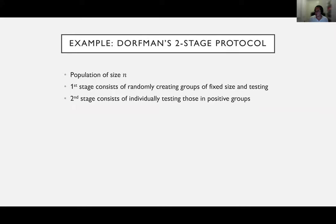An example to kick off the conversation on group testing is Dorfman's two-stage protocol from the 1940s, originally used to test soldiers for syphilis. In this protocol, a population of size N is partitioned into smaller disjoint groups — imagine groups of size 10 from a population of 100, using 10 tests for these group tests. The second stage: groups that came back positive are then tested individually. By the end of both stages, we know precisely who is infected, with potentially much smaller test usage than the population size.